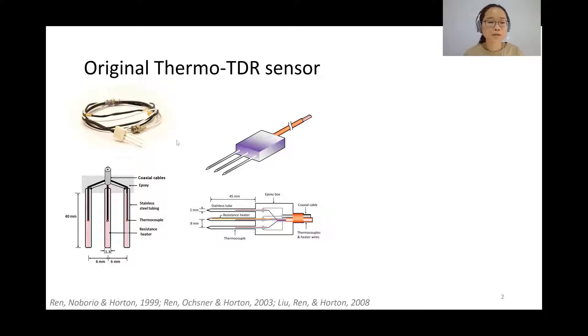We can see from this picture here that typically a thermal TDR sensor consists of three probes. In the middle probe it can release a heat pulse to heat the soil, and the other probes are the sensing probes that can get soil temperature measurements some distance away from the heater.